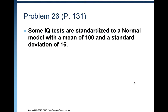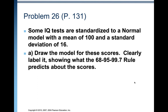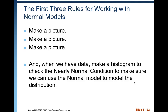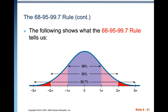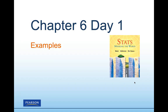Some IQ tests are standardized to a normal model with a mean of 100 and a standard deviation of 16. Draw the model for these scores and clearly label it showing what the 68-95-99.7 rule predicts. We want to draw a picture that is relevant to the current mean and standard deviation.